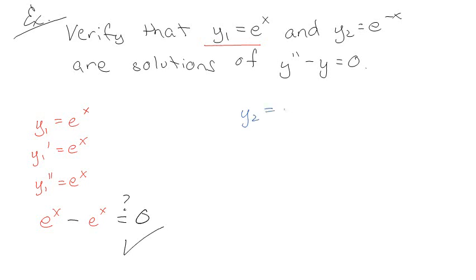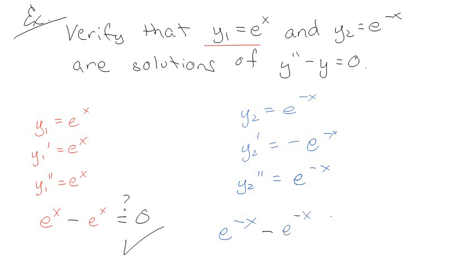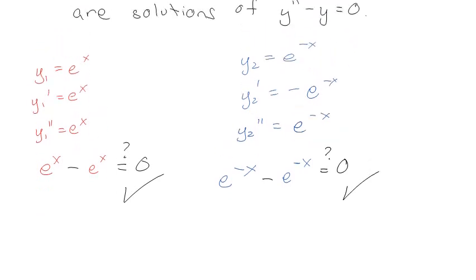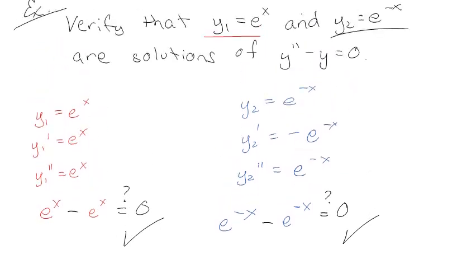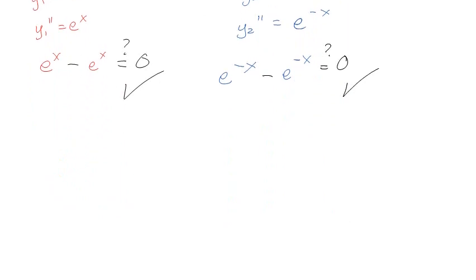Now we want to check y₂ = e^(−x). The first derivative is −e^(−x), and the second derivative is positive e^(−x) again, because that's how derivatives work. So if I plug in: y₂'' − y₂ = e^(−x) − e^(−x) = 0. Not shocked to find out that it equals zero! So we've verified y = eˣ and y = e^(−x).